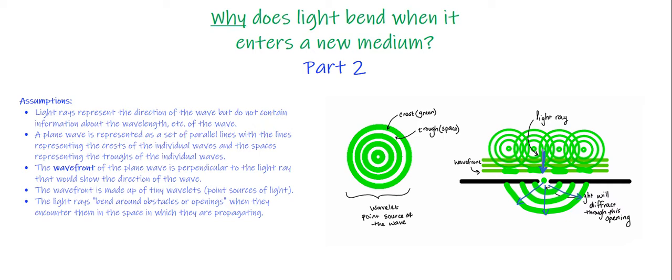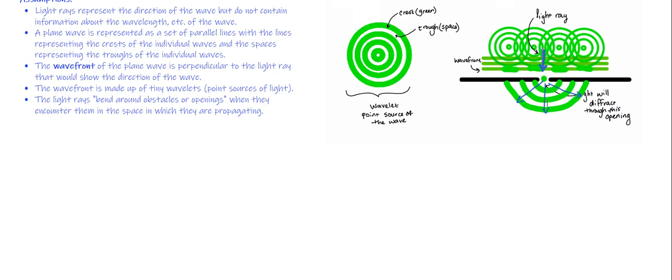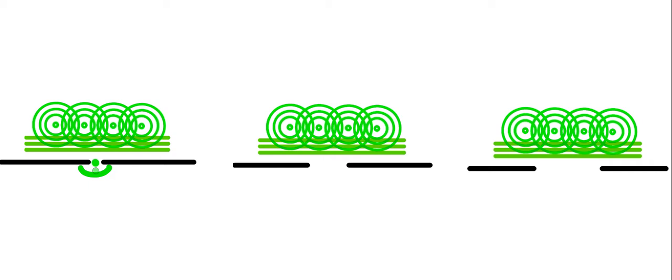Now let's take a look at what happens if this opening was a little bit bigger. So here I have three different scenarios. The first one is basically the one we just talked about—we've isolated just one wavelet here that will give us this very rounded effect of the wave coming through.